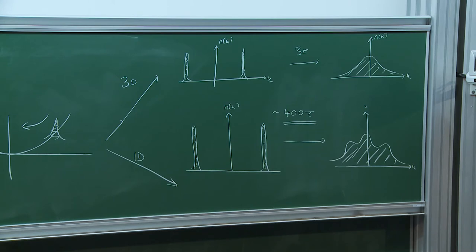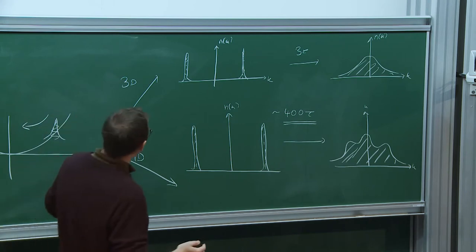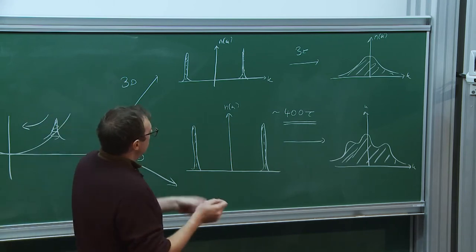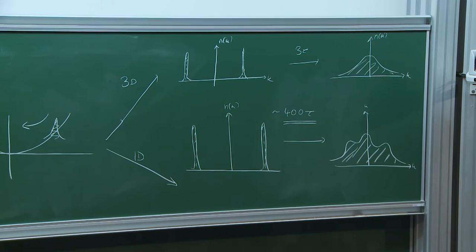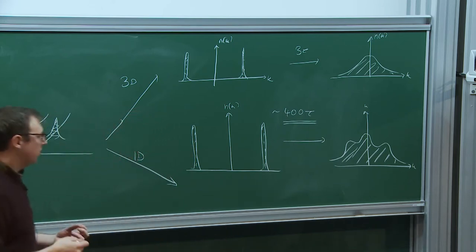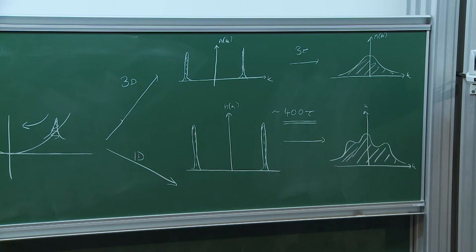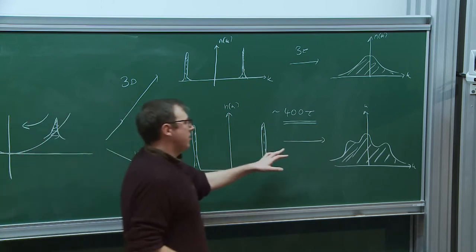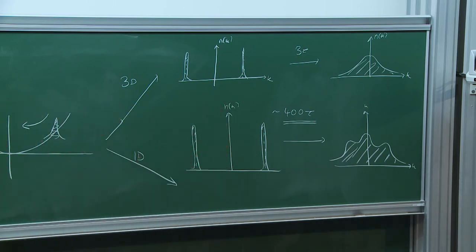One of the major questions is: why does 3D thermalise rapidly within three collisions, but 1D seems not to thermalise for any achievable experimental timescales? The central insight was that delta function interacting bosons in 1D are an integrable system. This means there are as many local conservation laws as there are degrees of freedom, which strongly restricts the dynamics and avoids thermalisation. It's been about 10 to 12 years of work to understand all the intricacies of this statement.